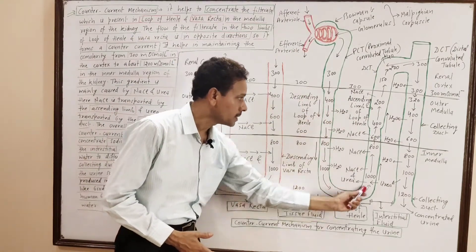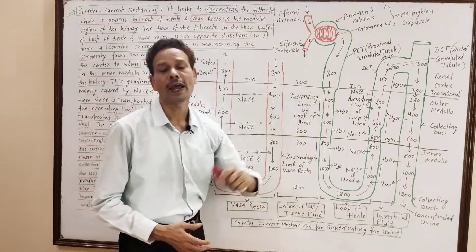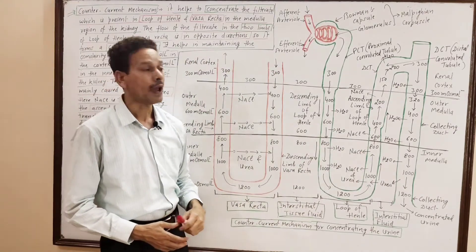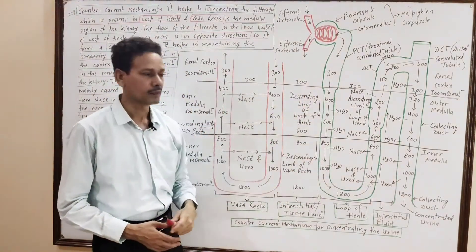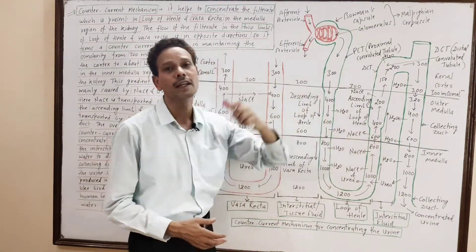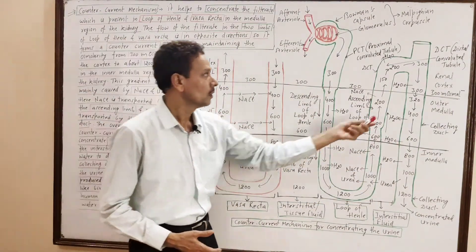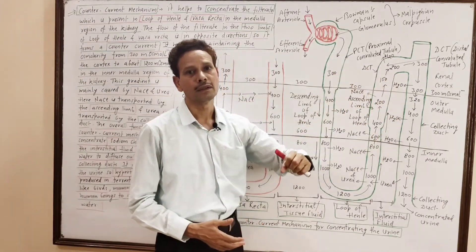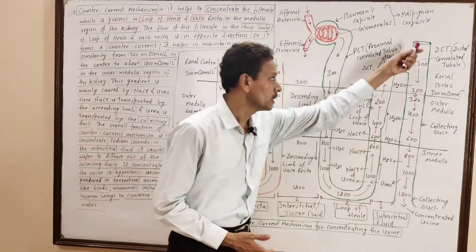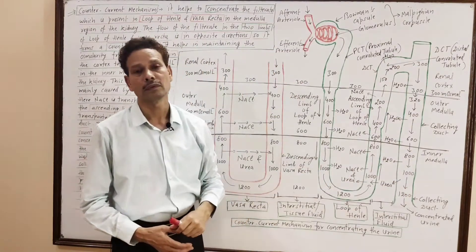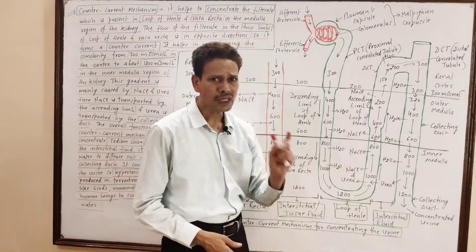This loop is the loop of Henle, having two parts: the descending limb and the ascending limb of the loop of Henle. The next part is the DCT — distal convoluted tubule — and the last part of the nephron is the collecting duct.